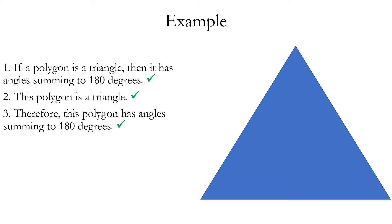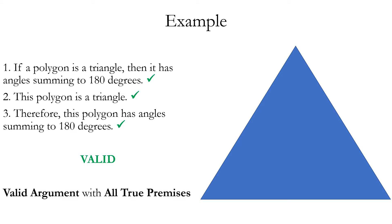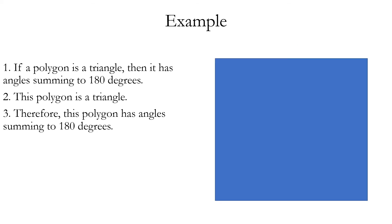We've done our truth value analysis, but now we need to do logical analysis. Even though the conclusion and premises are true, it does not prove the argument is valid. We need to ask: if the premises are true in general, does that in general prove the conclusion? The answer is yes, it is a valid argument form. This is an example of an argument that is valid and has all true premises. We can also use the word sound in logic to refer to being both valid and having true premises. A sound argument also necessarily has a true conclusion.